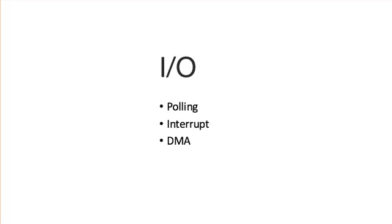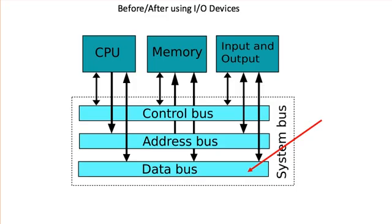Hi guys, in this video I'm going to explain the differences between polling, interrupt, and DMA, which is direct memory access. Before using I/O devices, the CPU is in charge of the bus. Once we include input and output, we have both of them who can control this data bus.